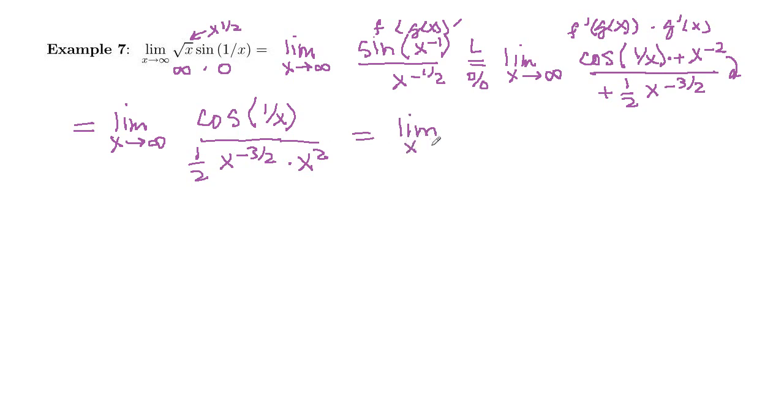So this would be limit x goes to infinity. Dividing by 1 half is multiplying by 2, so I'll go ahead and put a 2 out in front. And then we've got cosine 1 over x. And then in our denominator, when you multiply, you add exponents. So negative 3 halves plus 2, so plus 4 halves, would be x to the 1 half, which is the same as a square root.